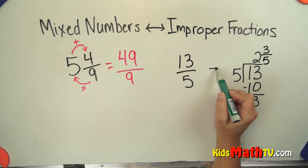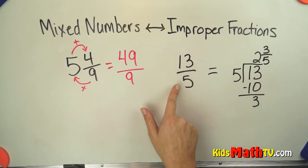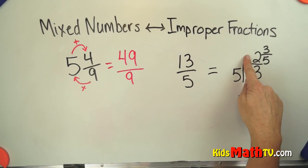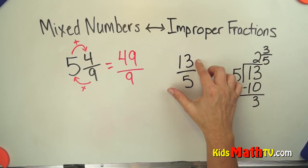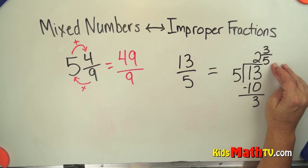So my improper fraction of 13 fifths becomes 2 wholes and 3 fifths. There are two sets of 5 in 13 and then 3 fifths left over.